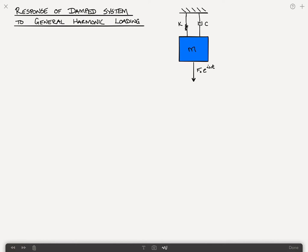Here we have our mass spring system with a damper. It's being subjected to a harmonic force that we're going to call F sub zero, which is the magnitude, times e to the i omega t.